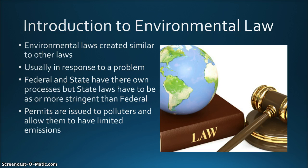After a law is passed, the implementation is performed by an agency. Although we commonly think of the Environmental Protection Agency, or EPA, as the primary environmental agency, we will discuss the role of other federal agencies such as the Department of Interior, where the U.S. Fish and Wildlife Service is housed, and the Department of Defense, as well as other agencies that have a role in environmental policy and law.